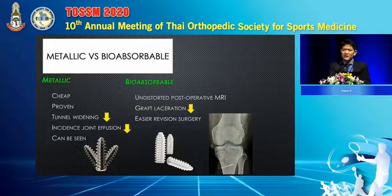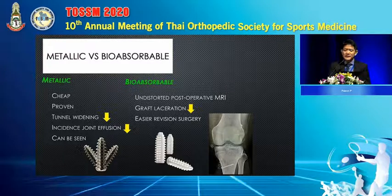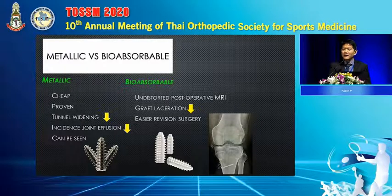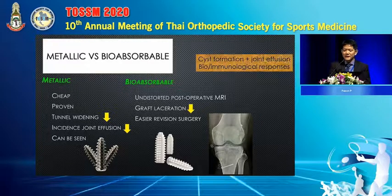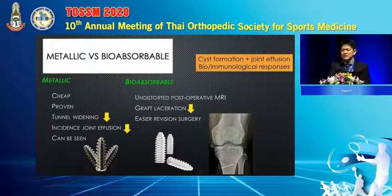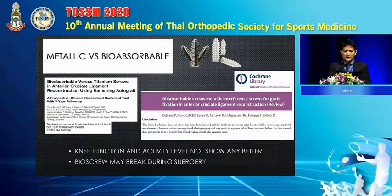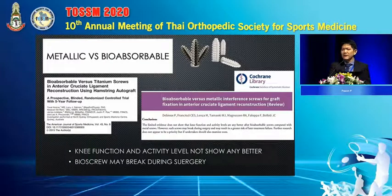The Interference Screw material options are Metal and Bioabsorbable. Metal is a good tool and has been used for many years. The Bioabsorbable screw is also a good option because it doesn't distort post-operative MRI imaging. However, the drawback is that there are biological and immunological responses, and it may cause tunnel widening. From review and RCT studies, the material change does not significantly affect functional or activity level outcomes, though there may be more graft breakage with certain materials.